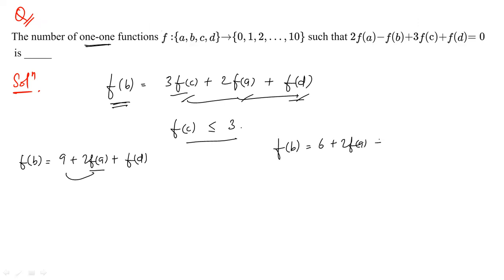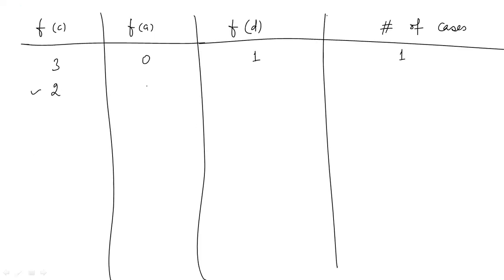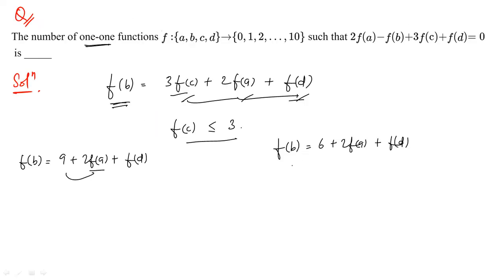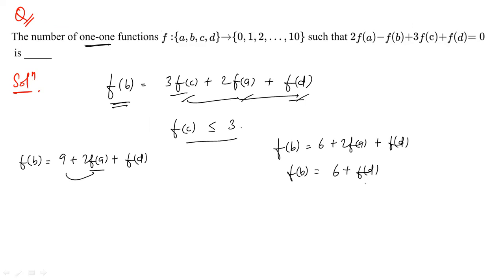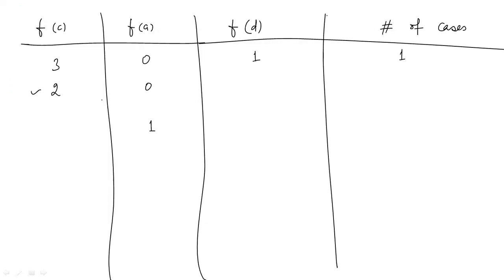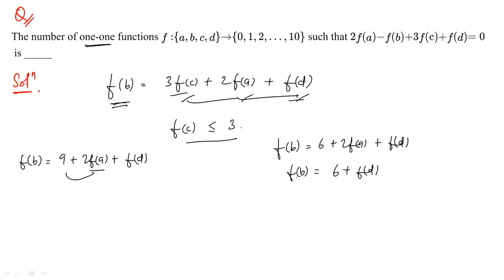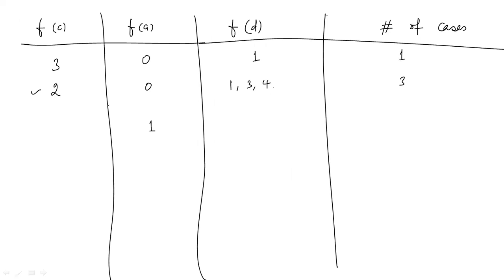Case f(c) = 2: The equation becomes f(b) = 6 + 2f(a) + f(d). Here f(a) can be 0 or 1 (not 2, already assigned). When f(a) = 0: f(b) = 6 + f(d), and f(d) can be 1, 3, or 4 (0 and 2 are taken) — three cases. When f(a) = 1: f(b) = 8 + f(d), and f(d) can only be 0 (1 and 2 are taken) — one case. Total: four cases.